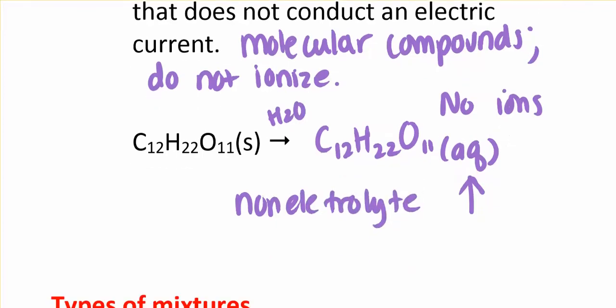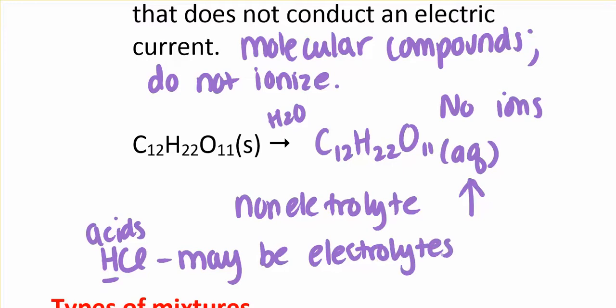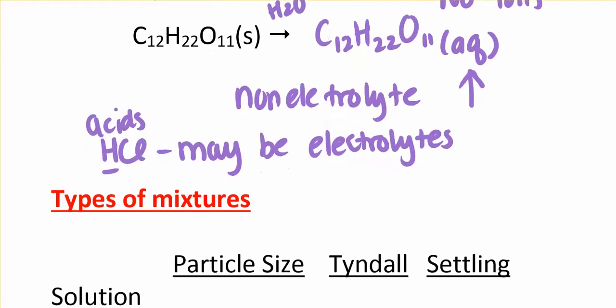There is one exception to molecular compounds not dissolving. Compounds that are acids that have hydrogen in front, acids may be electrolytes because acids with the hydrogen in front, when you put them in water they sometimes do break apart into ions and so they may be electrolytes, they're kind of special that way.